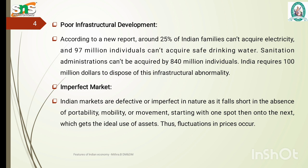Poor infrastructure development is another feature. According to a new report, around 25% of India cannot acquire electricity and 97 million individuals cannot acquire safe drinking water. Sanitation administration cannot be acquired by 840 million individuals. India requires 100 million dollars to dispose of this infrastructural abnormality.